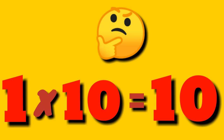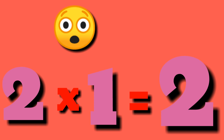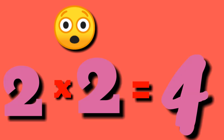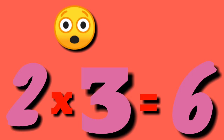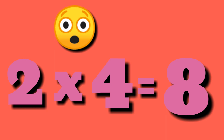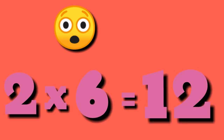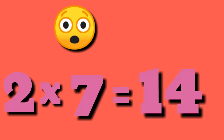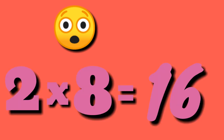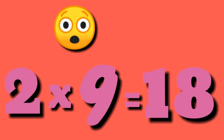Table of 2. 2 ones are 2, 2 twos are 4, 2 threes are 6, 2 fours are 8, 2 fives are 10, 2 sixes are 12, 2 sevens are 14, 2 eights are 16, 2 nines are 18, 2 tens are 20.